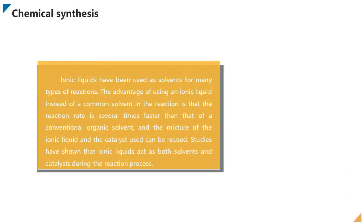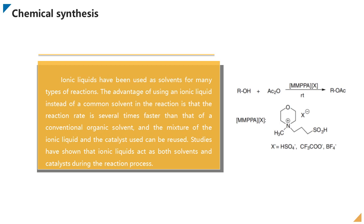Due to their unique properties, ionic liquids are widely used in various fields of chemical research. Ionic liquids have been used as solvents for many types of reactions. The advantage of using an ionic liquid instead of a common solvent is that the reaction rate is several times faster than that of a conventional organic solvent, and the mixture of the ionic liquid and the catalyst used can be reused. Studies have shown that ionic liquids act as both solvents and catalysts during the reaction process.